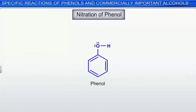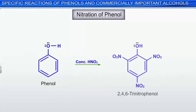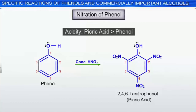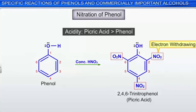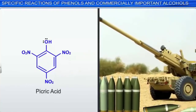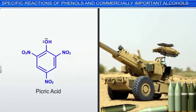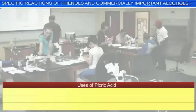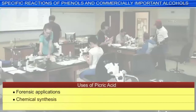When phenol reacts with concentrated nitric acid, the reaction produces 2,4,6-trinitrophenol, commonly known as picric acid, though in low yield. Picric acid is a stronger acid than phenol because of three electron-withdrawing nitro groups, which facilitate the release of a hydrogen ion. It is explosive and was formerly used in artillery and munitions. In the laboratory, picric acid must be stored wet, else explosive metal picrates may form. It is used in forensic applications, chemical synthesis, and gram staining in biology.